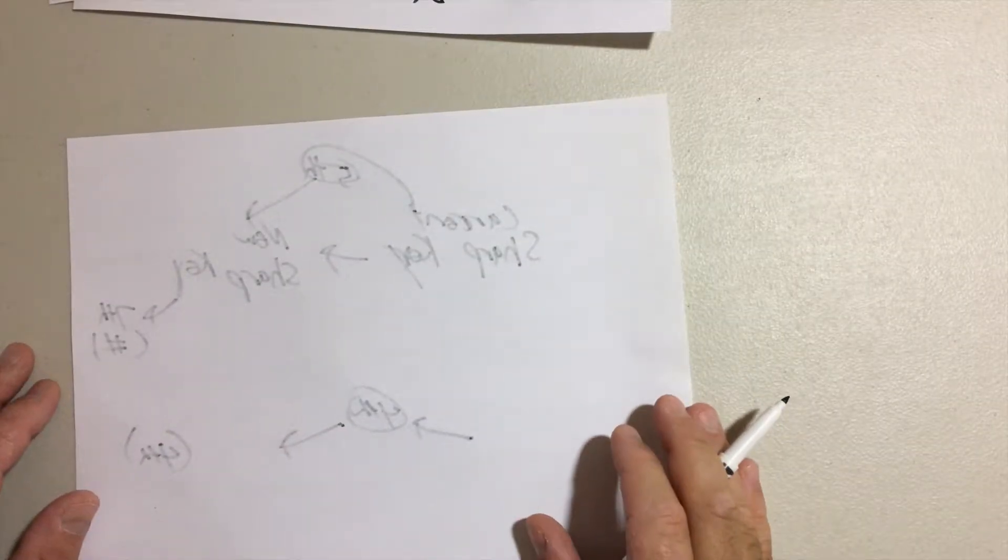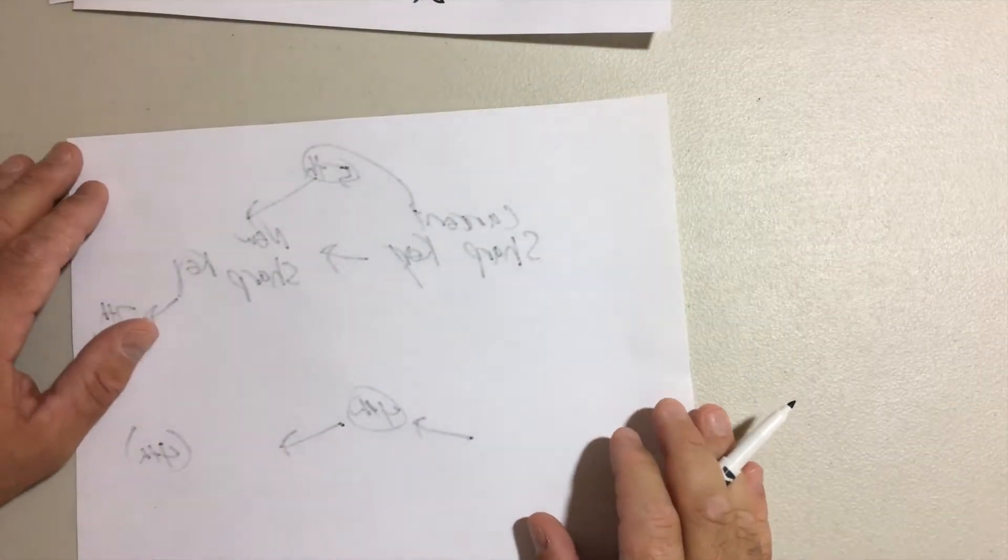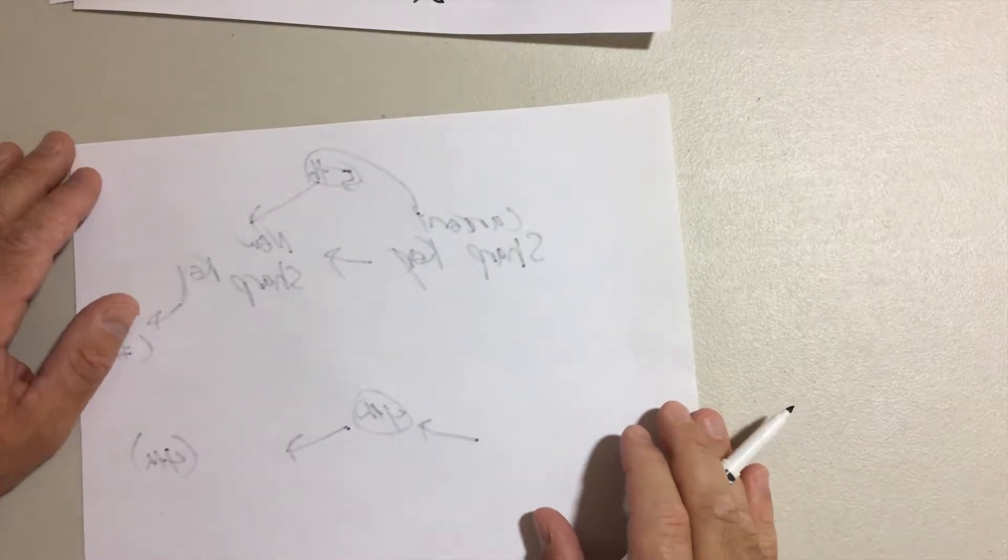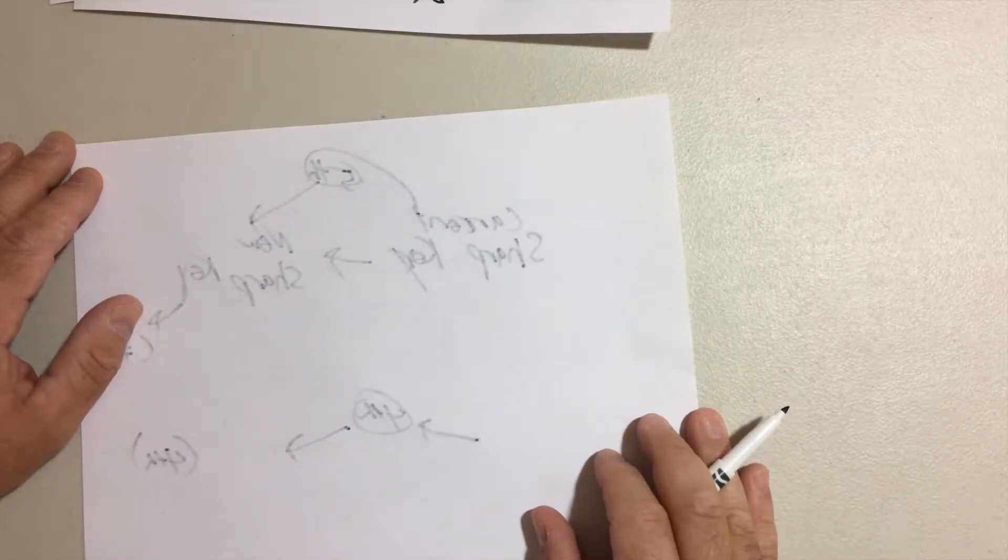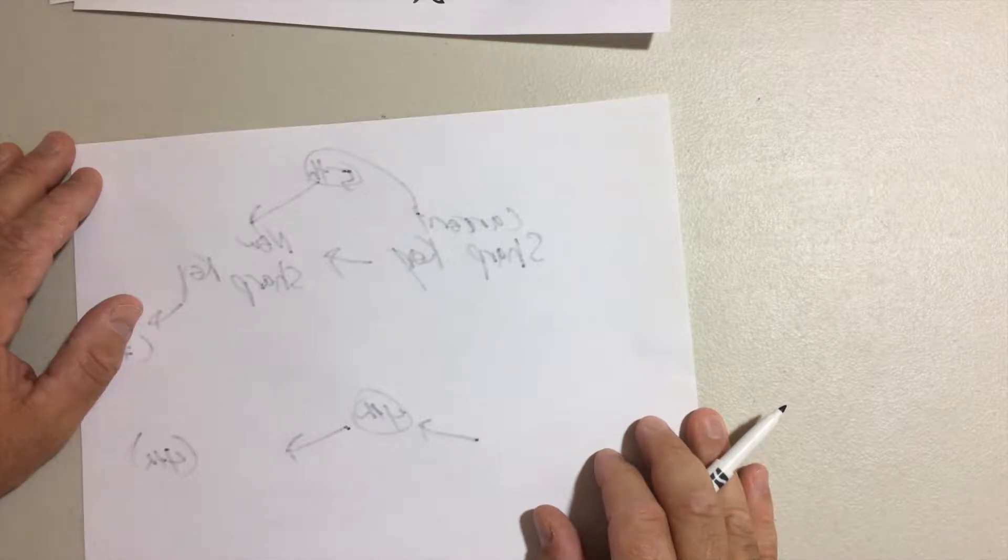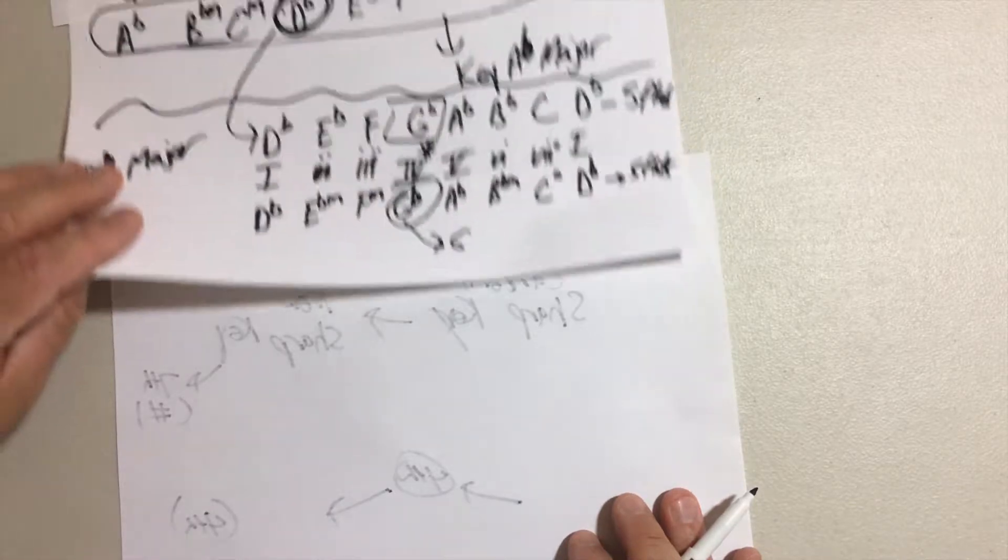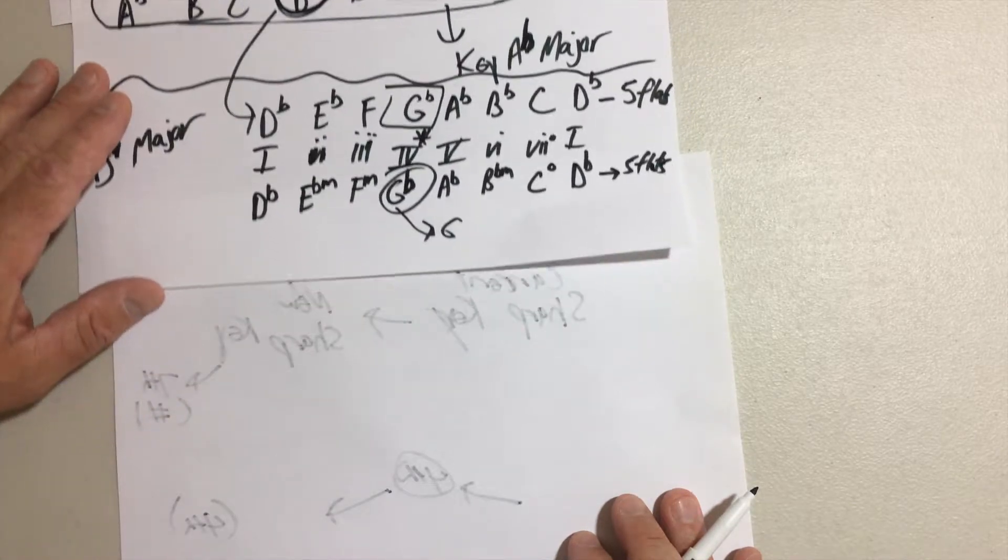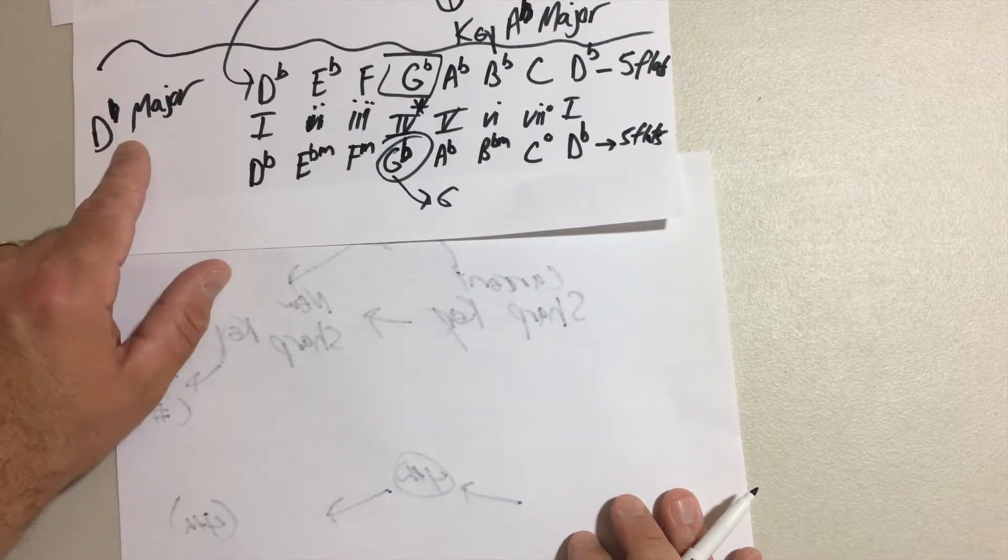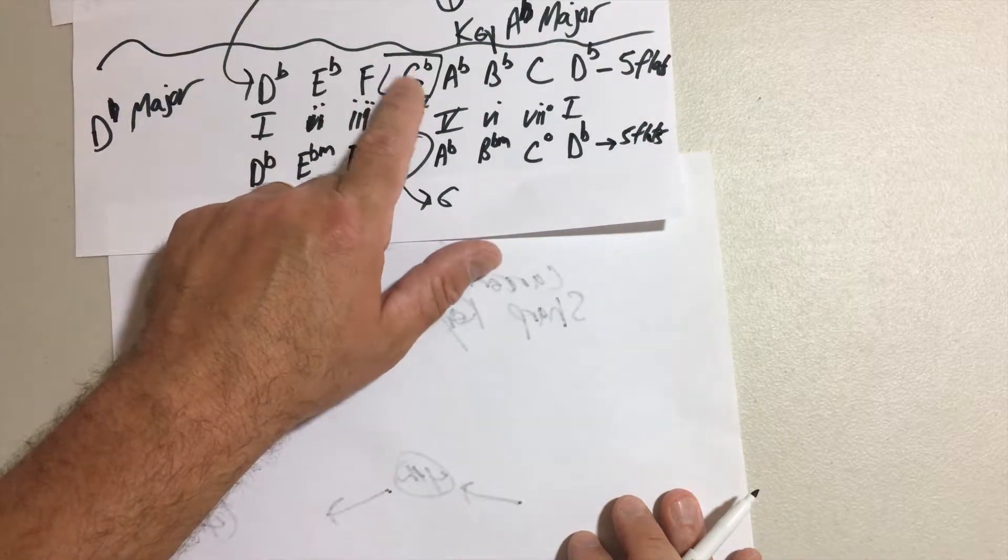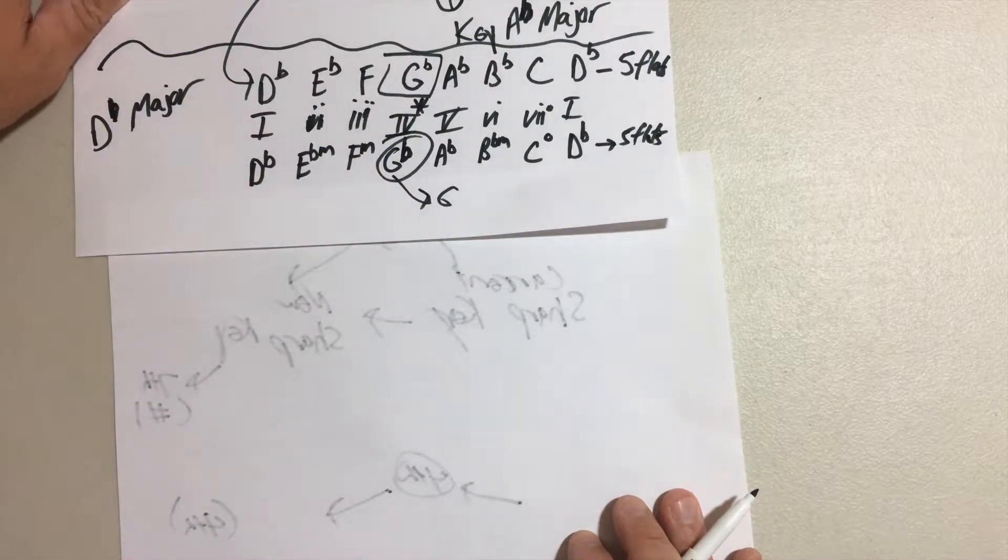Alright Dan here from Guitar From the Heart, and today we're gonna do key number six, or the key that has six flats. I said from the last video that looking at the last key that had five flats, it was D flat major, and the four of that key was going to be G flat.